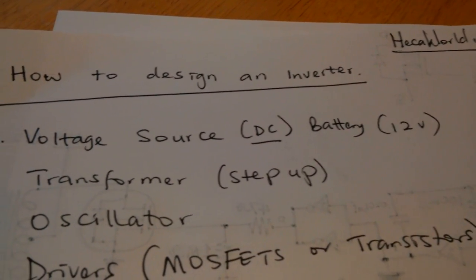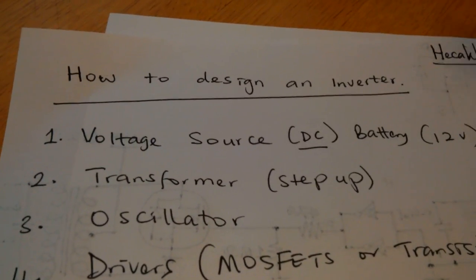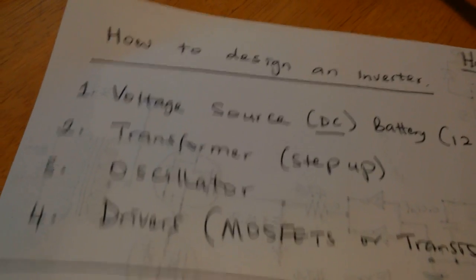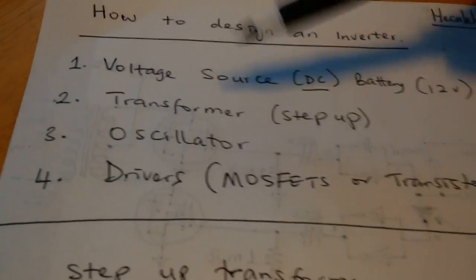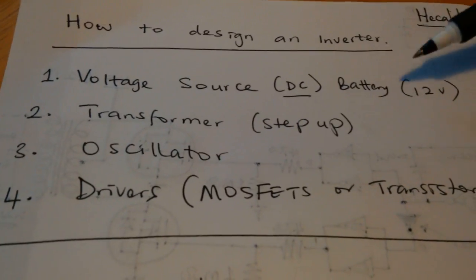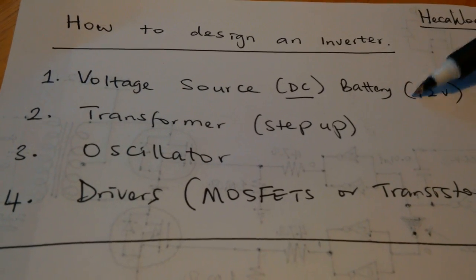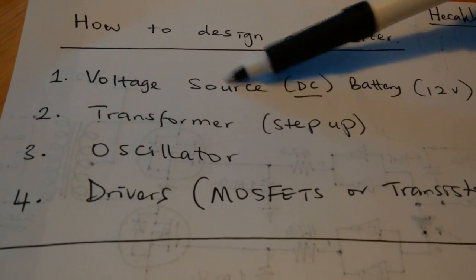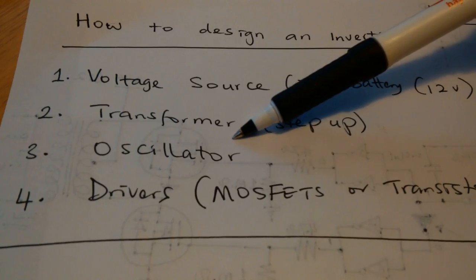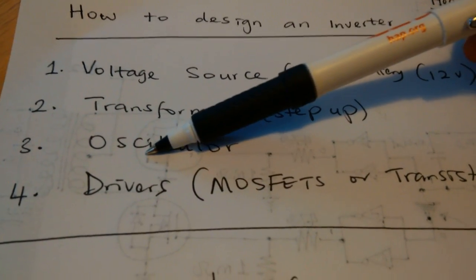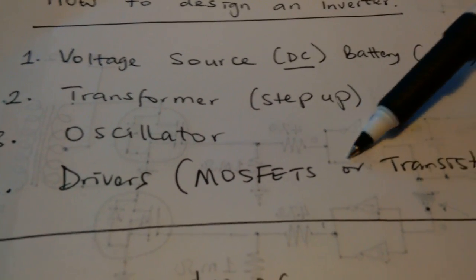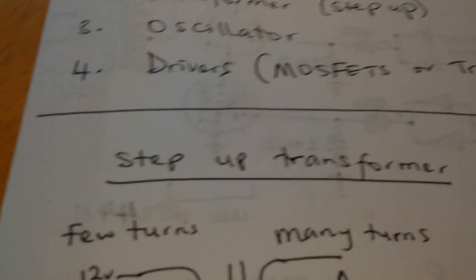Hello again and welcome to HECA World Unlimited. I'll show you quickly how to make an inverter. You need a voltage source or voltage sources, normally batteries. You need transformers or a transformer. You need an oscillator. You need drivers. By this we mean MOSFETs or transistors.